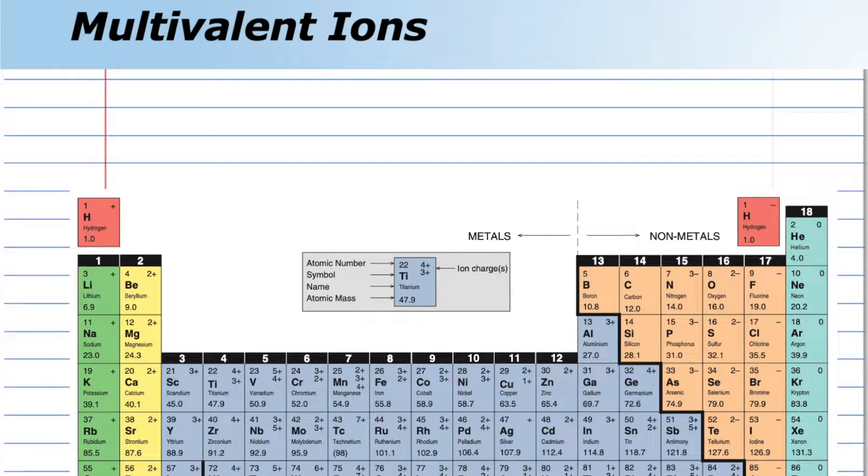The question is when are Roman numerals used in chemical names? Roman numerals are used to identify the charge of the transition metal in a compound.